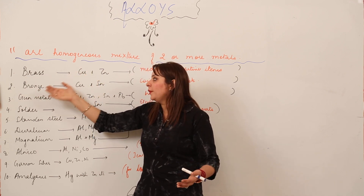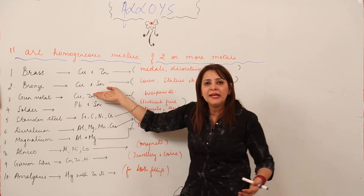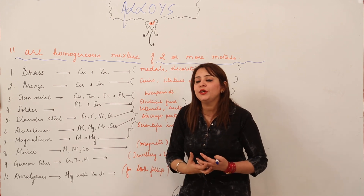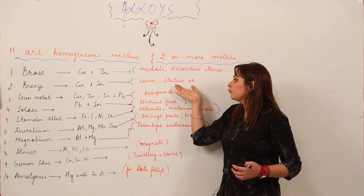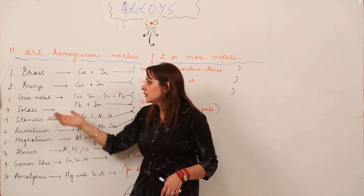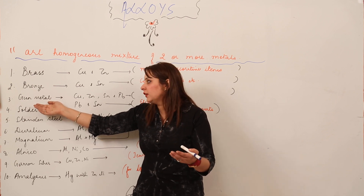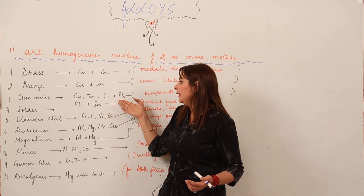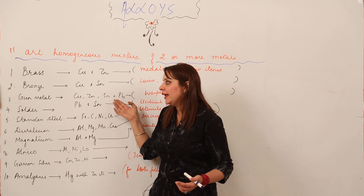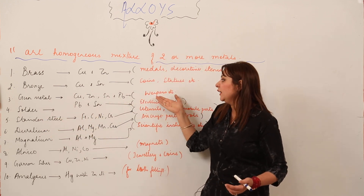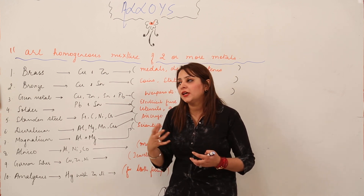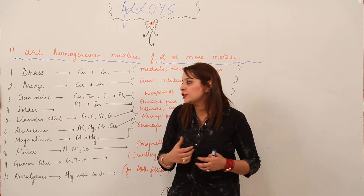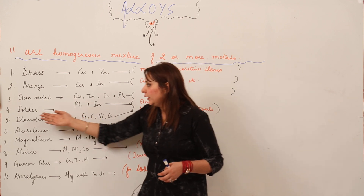The second alloy is bronze, another alloy of copper, in which copper is mixed with tin (Sn). Bronze is used for making coins, statues, and decorative items. The third alloy is gun metal, made up of copper, zinc, tin, and lead. It is used to make weapons — specifically the refills or bearings used in weapons.